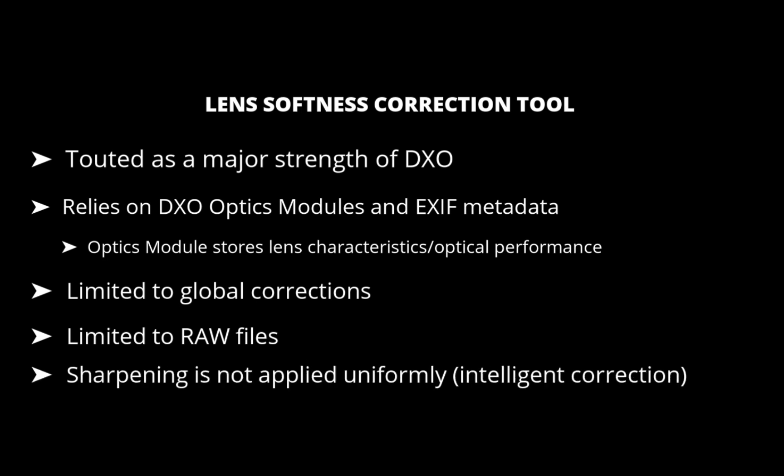This tool does not apply sharpening uniformly. For example, if the lens-camera combination tends to produce softer corners and a sharper center, then the software will subject the corners to a stronger correction and the center to a weaker one to give an optimum result. DxO calls this an intelligent correction not only because it sharpens optimally, but also because it does not introduce artifacts typical in other sharpening processes.